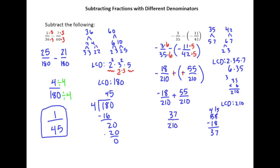And, of course, you always need to make sure that you can't reduce anymore, but 37 is a prime number. And we can see the prime factorization of 210 right up here as the LCD. And clearly 37 doesn't appear there. So we know that this is the reduced fraction answer.